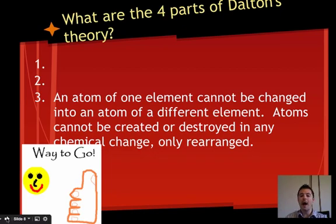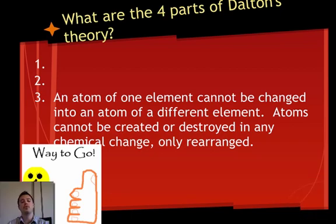An atom of one element cannot be changed into an atom of a different element. Atoms cannot be created or destroyed in a chemical change. They can only be rearranged. This is absolutely awesome and correct. The atom of one element cannot be changed into an atom of a different element. I can't take hydrogen and change it into oxygen. It can't happen. We can react to that in some way to create oxygen through a chemical reaction, but we cannot make hydrogen disappear and reappear as oxygen. It's not going to work.